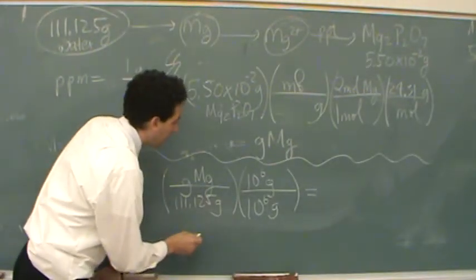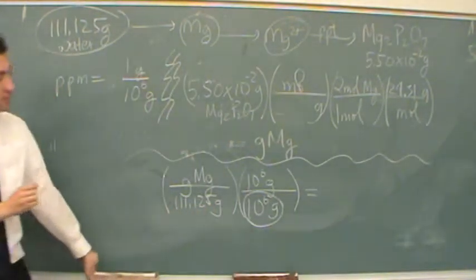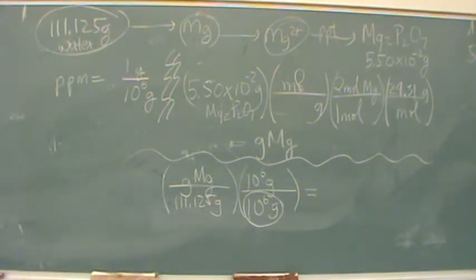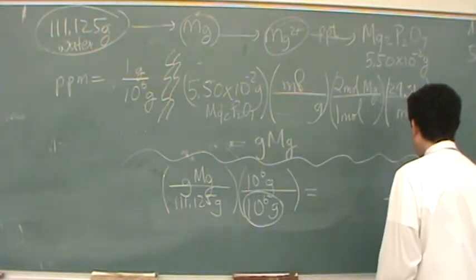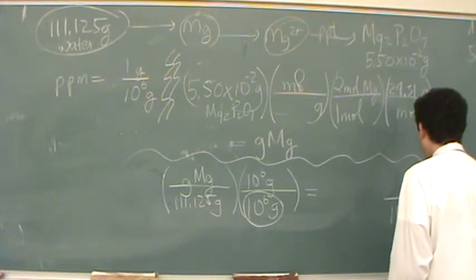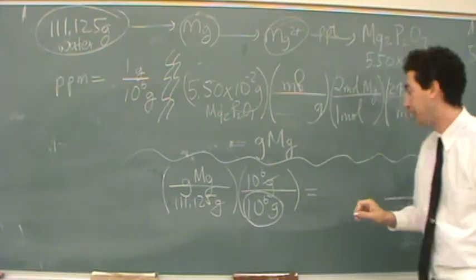But now, this million grams right there, I'm not going to use that number. So that number is just going to transfer over here, 10 to the 6th grams. This grams and this grams are going to cancel out.